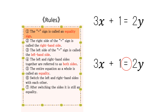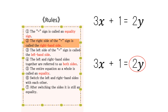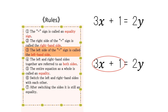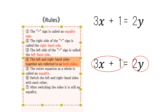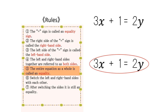The symbol circled in red is called an equal sign. The right side of the equation circled in red is called the right-hand side of the equation. The left side of the equation circled in red is called the left-hand side of the equation. The left and right-hand sides together are referred to as both sides. The entire equation as a whole is called an equality.